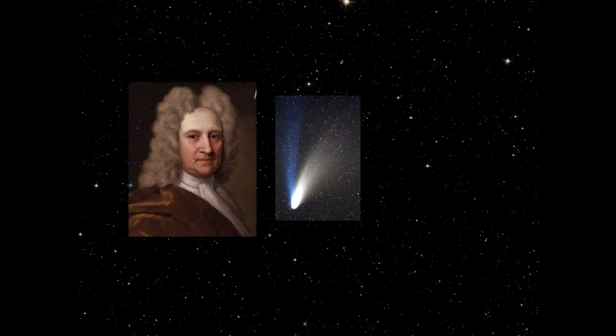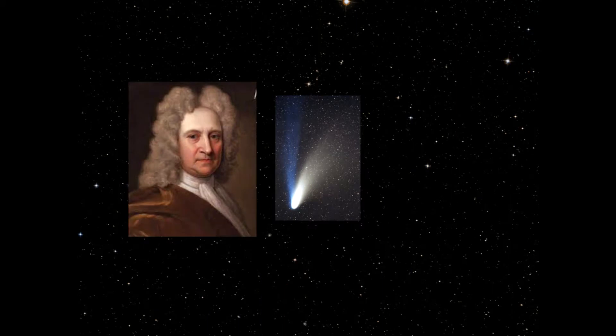But in 1705, astronomer Edmund Halley revolutionized this idea. Using Isaac Newton's gravitational theories, Halley was able to prove that comets observed in 1531, 1607, and 1682 were actually the same one, and he predicted that the same comet would pass by again in 1758.